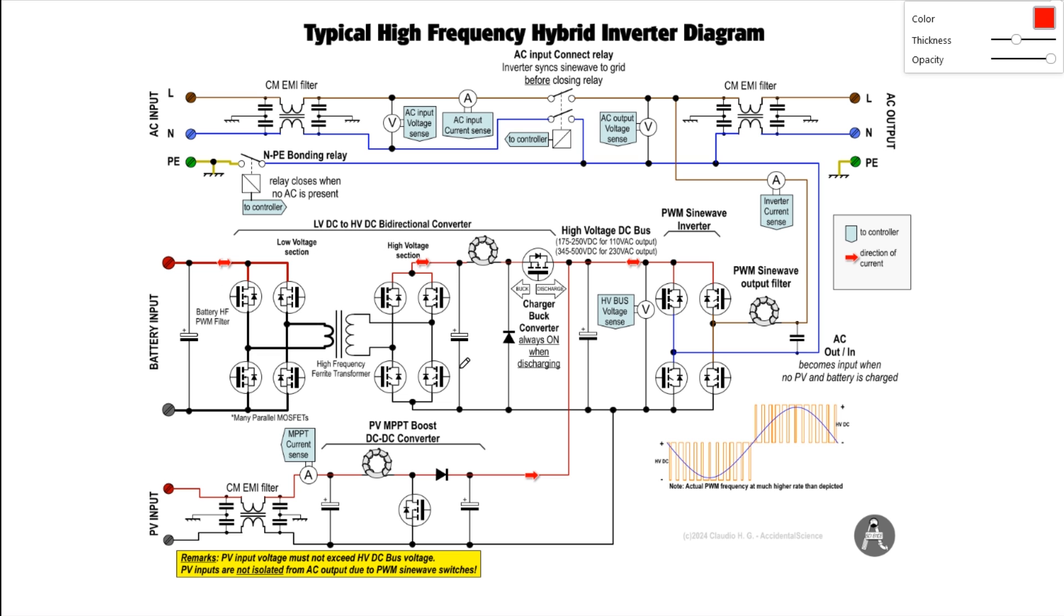This part of the circuit, this is essentially a DC-DC converter through a high frequency transformer that moves the power from this part to this part charging the battery when the high voltage DC bus is at its maximum voltage or has enough voltage to charge the battery.